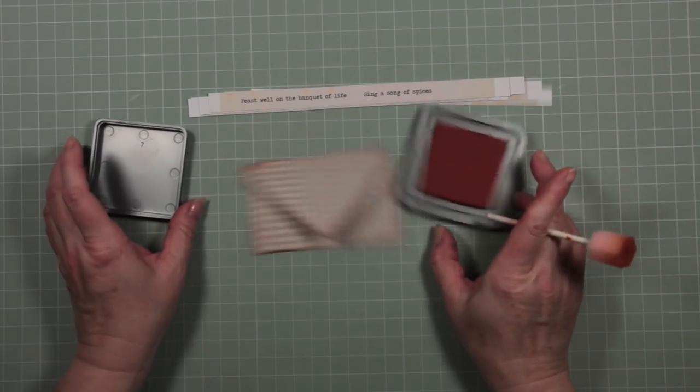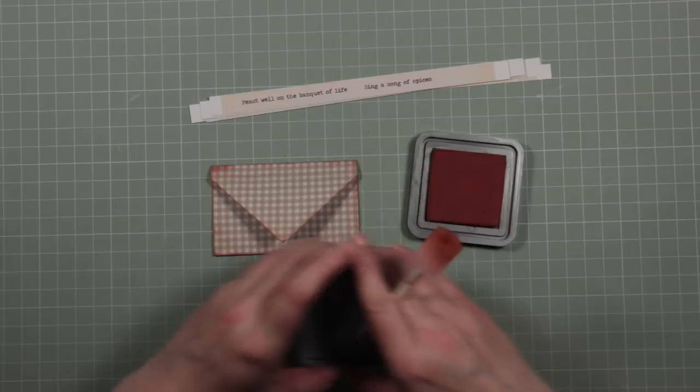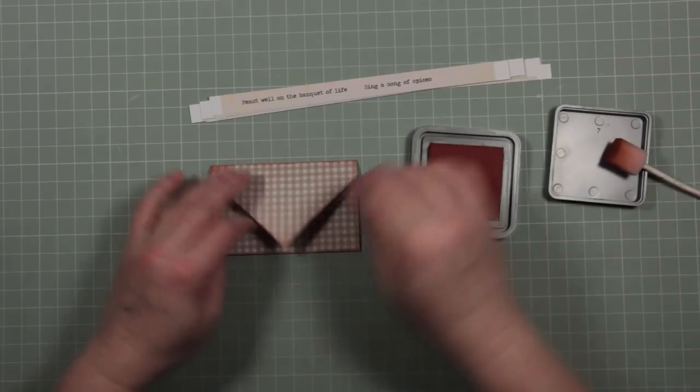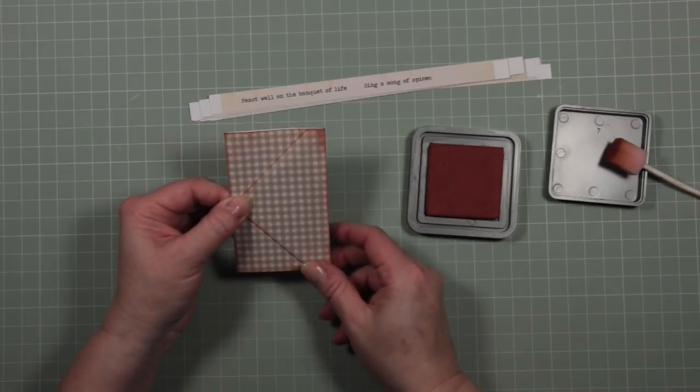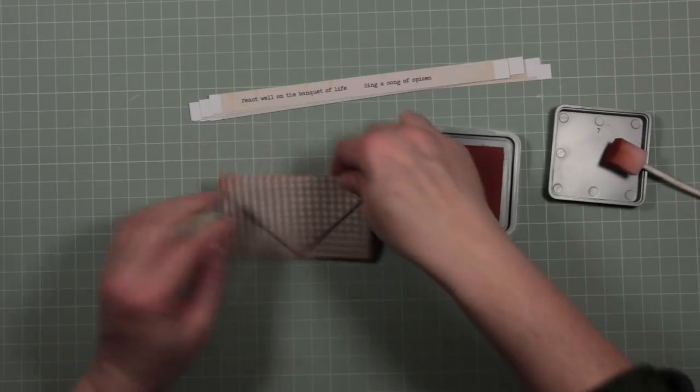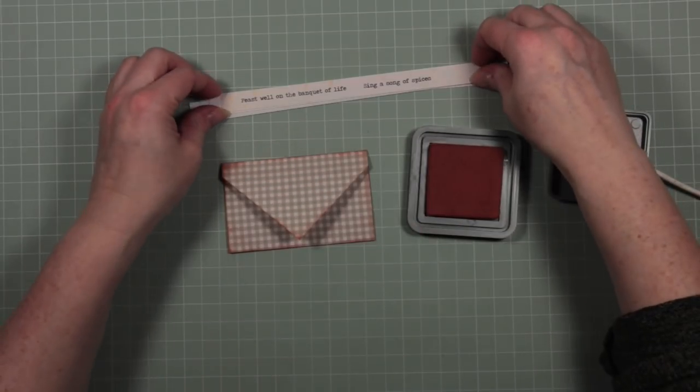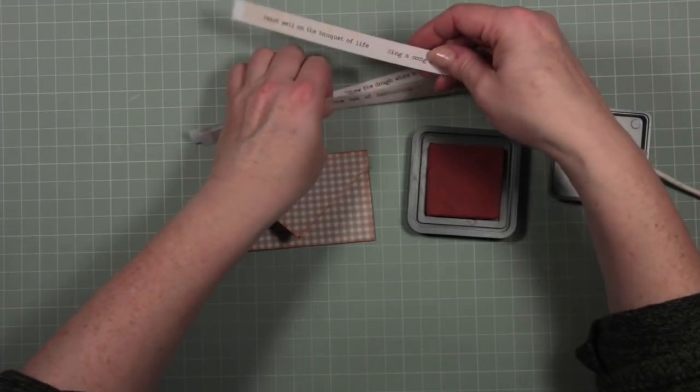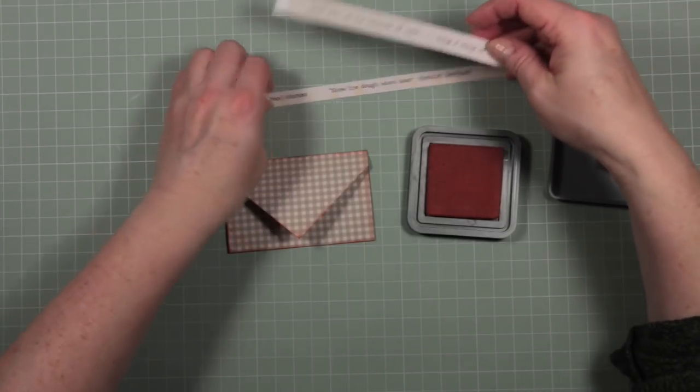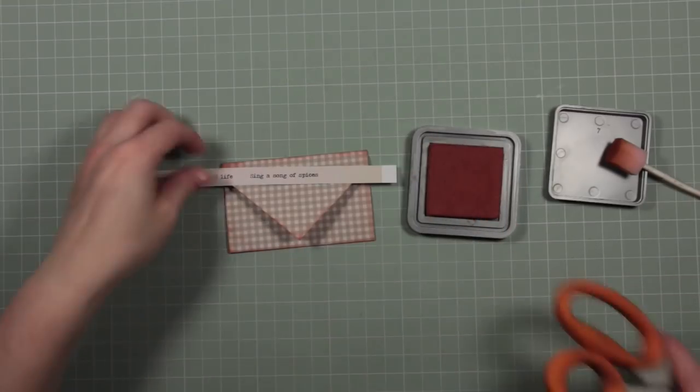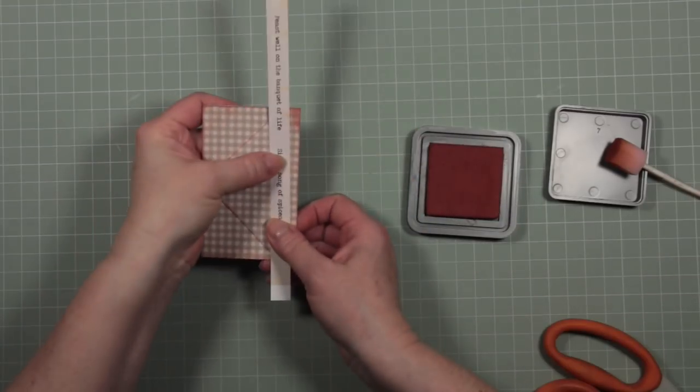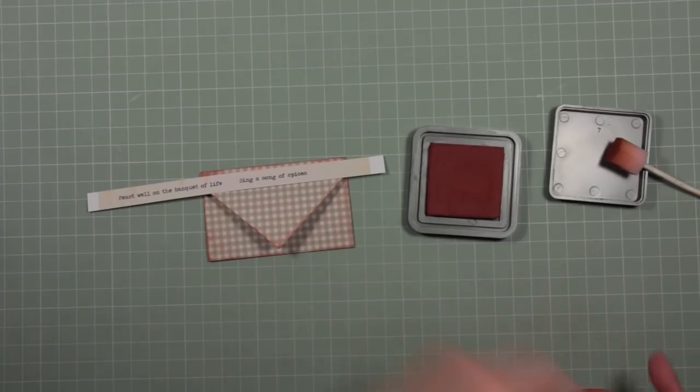Love those colors, they're beautiful. I'm going to keep my ink ready because on my envelope, it's going to sit in my journal like this. But I think I'm going to add my words along the top. I've got a phrase here that says, sing a song of spices, and I'm going to use that to stick onto the top of my envelope. When it's in the book, it will look like that. That's fine.